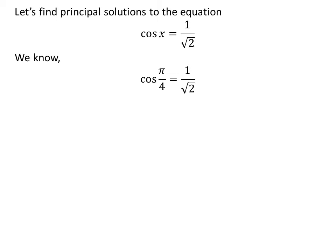We know the value of cosine of pi upon 4 is 1 upon square root of 2. We also know the value of cosine of x repeats after the interval of 2 times pi, so cosine of 2 times pi minus a is equal to cosine of minus a. We also know the trigonometric identity cosine of minus a is equal to cosine of a. The proof of this identity is given in the video appearing in the upper right corner, and the link is also given in the description.